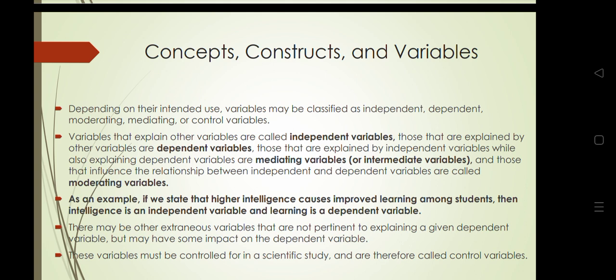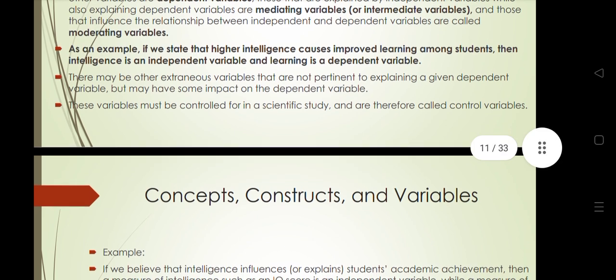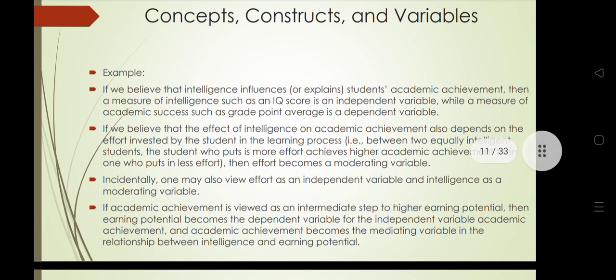There may also be extraneous variables, and these must be controlled for in a scientific study — they are called controlled variables. For example, if we believe that intelligence influences a student's academic achievement, then intelligence is the independent variable while the measure of academic success such as GPA or percentage is the dependent variable.